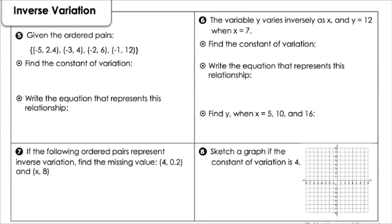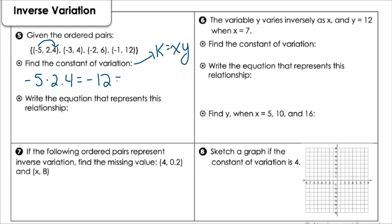Now let's look at inverse variation. Here are our ordered pairs. For inverse variation, to find the constant we do x times y. So I'm going to multiply these together: negative 5 times 2.4 gives a constant of negative 12 for k. I can then write my equation as y equals negative 12 over x.